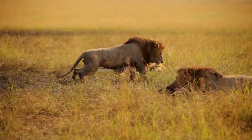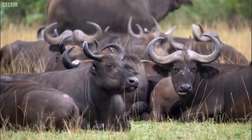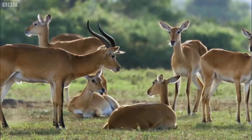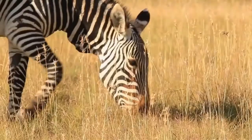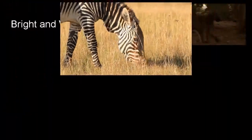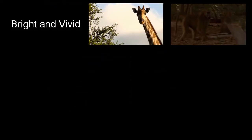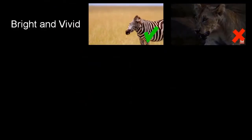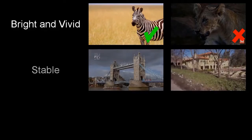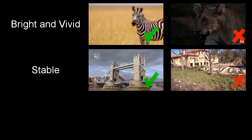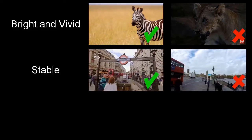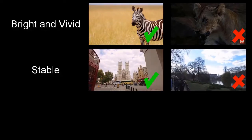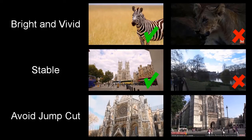The video montage should adhere to cinematographic guidelines such as visual continuity, tone illumination, duration, and so on. For example, visually bright and vivid shots are encouraged. Visual content should be stable, and jump cuts should be avoided.